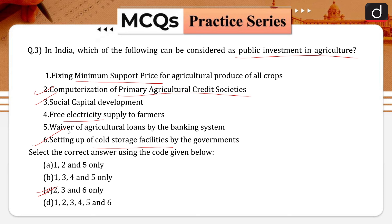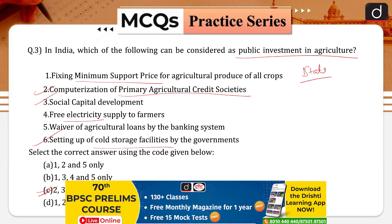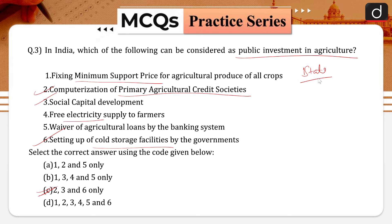Public investment is an investment by the state — central, state and local governments or through publicly owned companies — to build the nation's capital stock by devoting resources to basic physical infrastructure like roads, bridges, rail lines, airports, water distribution, innovative activities, green investments and education that leads to higher productivity or higher living standards.